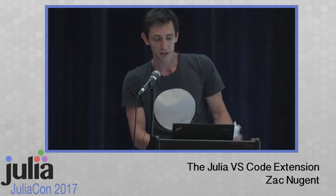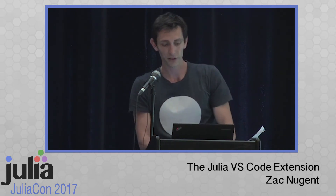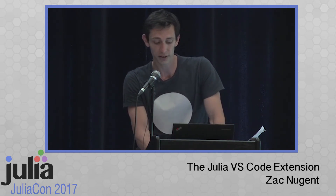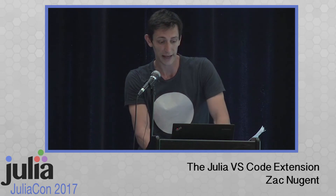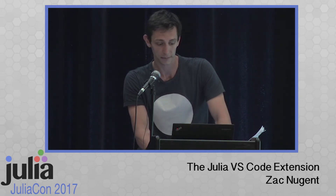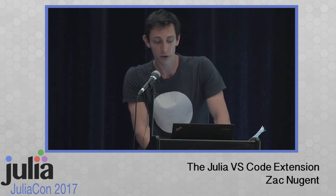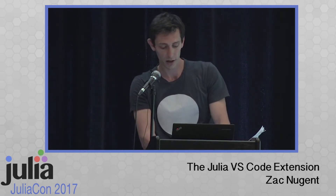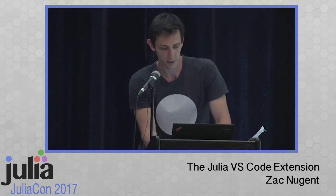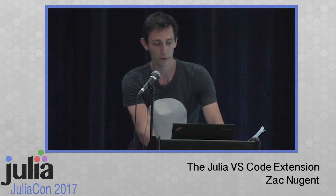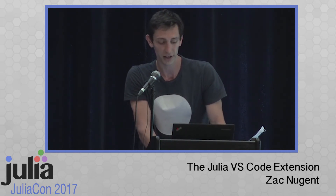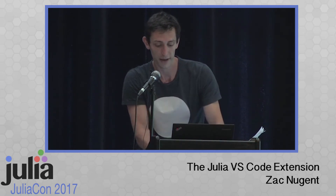We also have auto-completions. So if you start typing — for example, Rand — you'll get all the completions that you would in the REPL, as well as documentation. This also works for variables that you define: if I've got something that's an integer and I want to find it later in my code, it pops up. There's also a word-based completion from VS Code itself, but that should not appear in later versions.